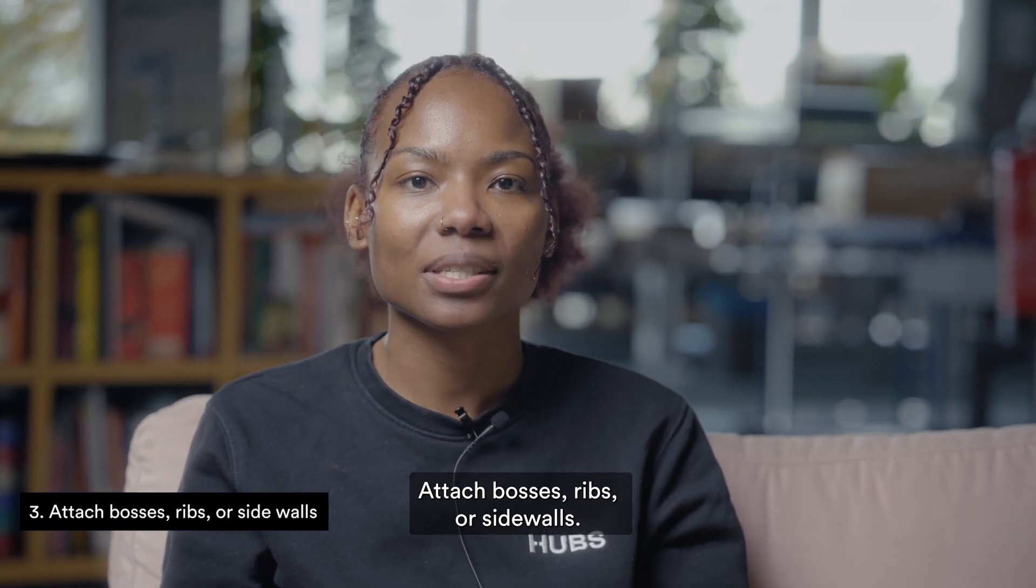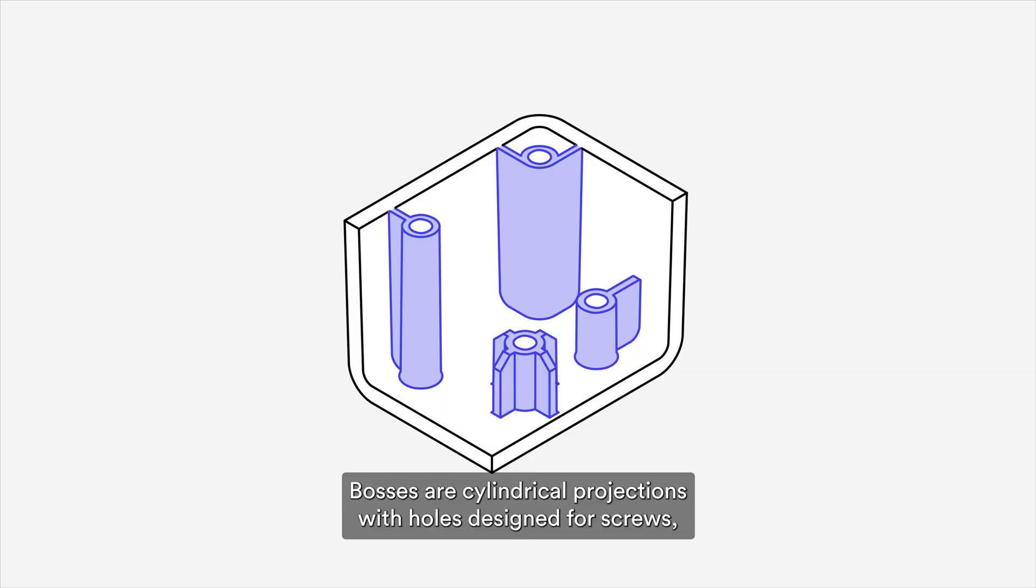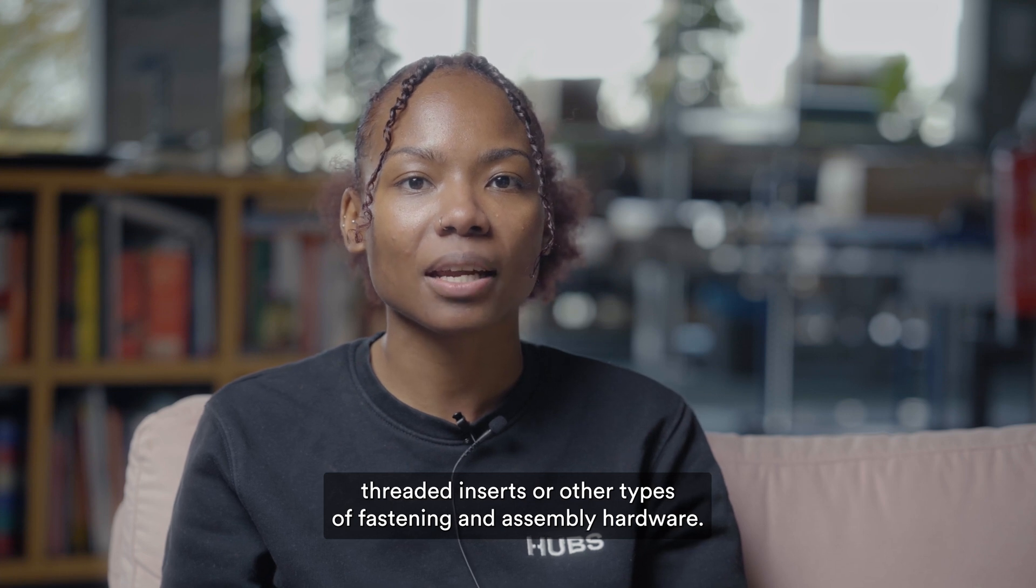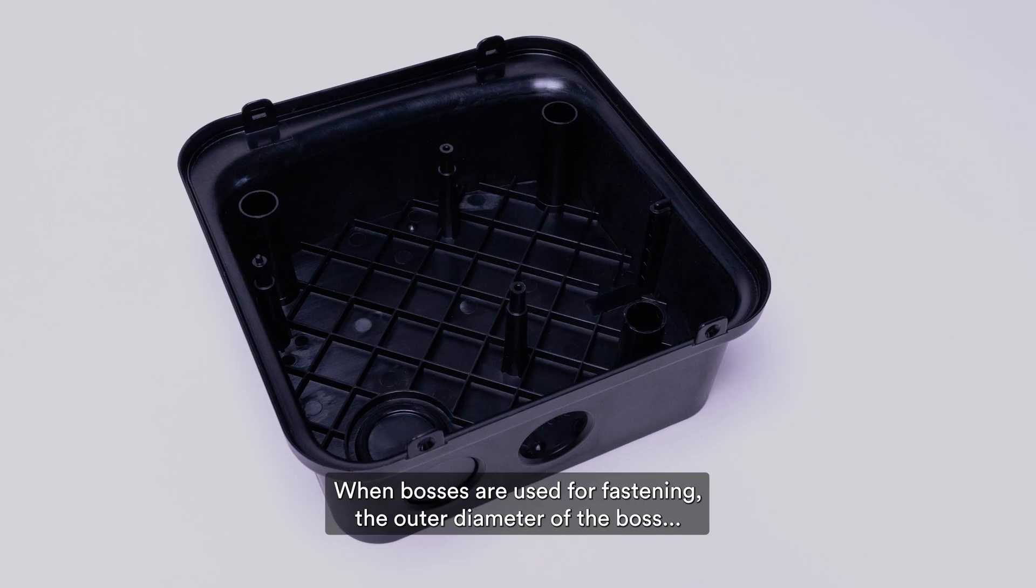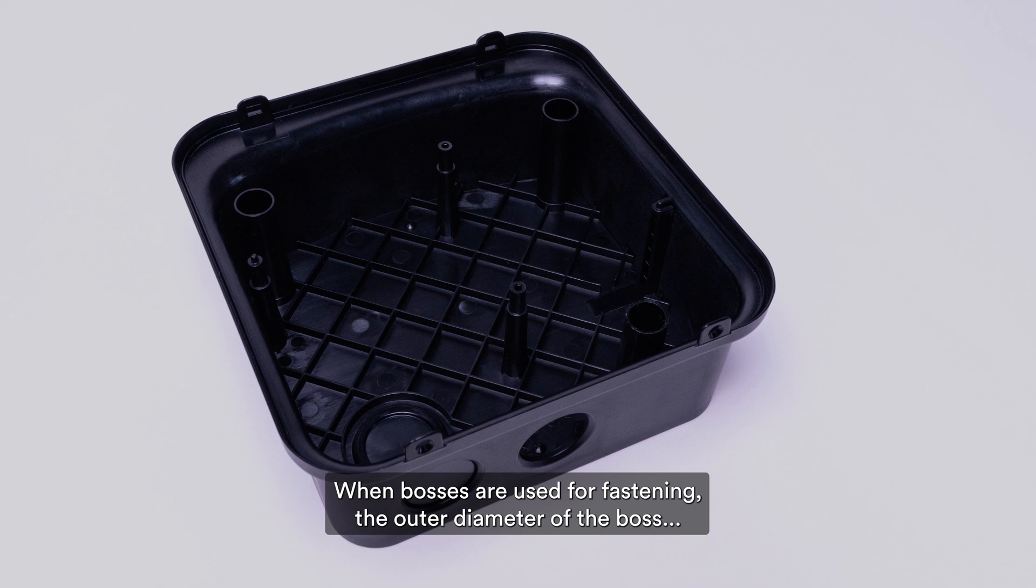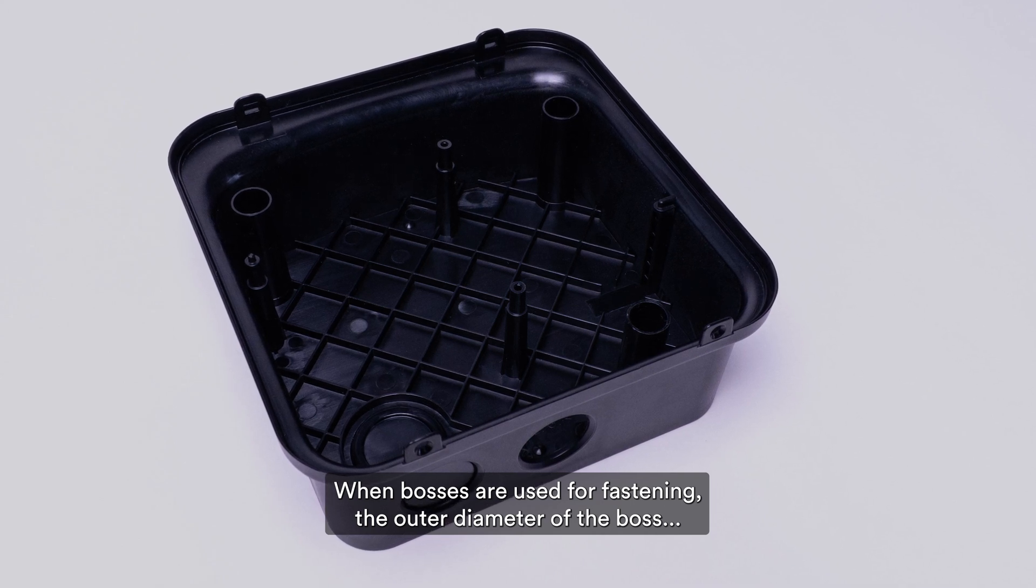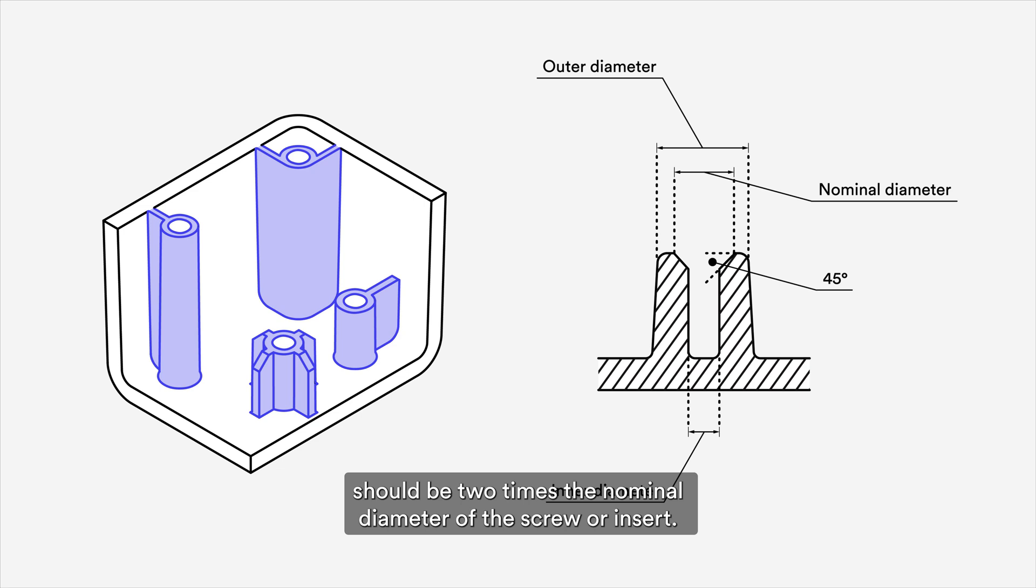Attach bosses, ribs, or sidewalls. Bosses are cylindrical projections with holes designed for screws, threaded inserts, or other types of fastening and assembly hardware. When bosses are used for fastening, the outer diameter should be two times the nominal diameter of the screw or insert. The inner diameter should be equal to the diameter of the core of the screw.